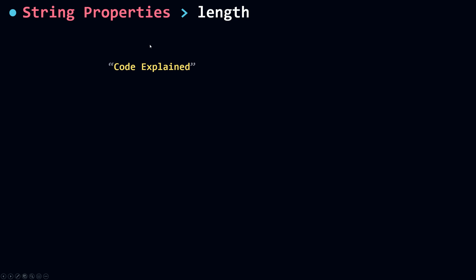If you create a string and assign it to a const variable called str, in a text editor like VS Code, when you type str followed by a dot, VS Code will suggest all the properties and methods you can access for the string object. If you type str.length, you can access the length property of your string.